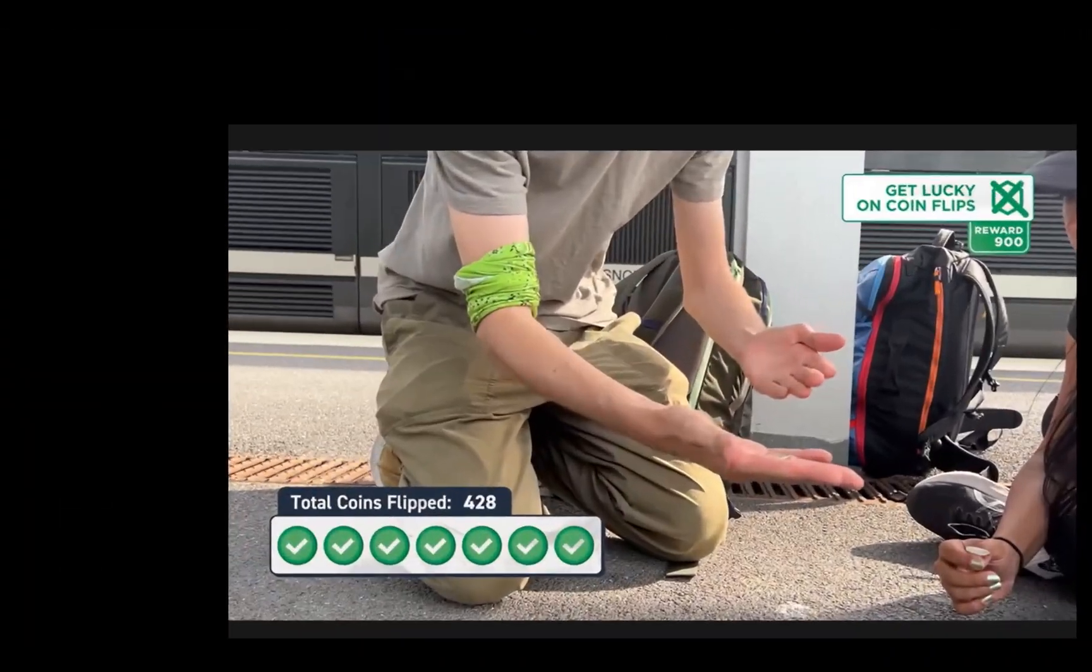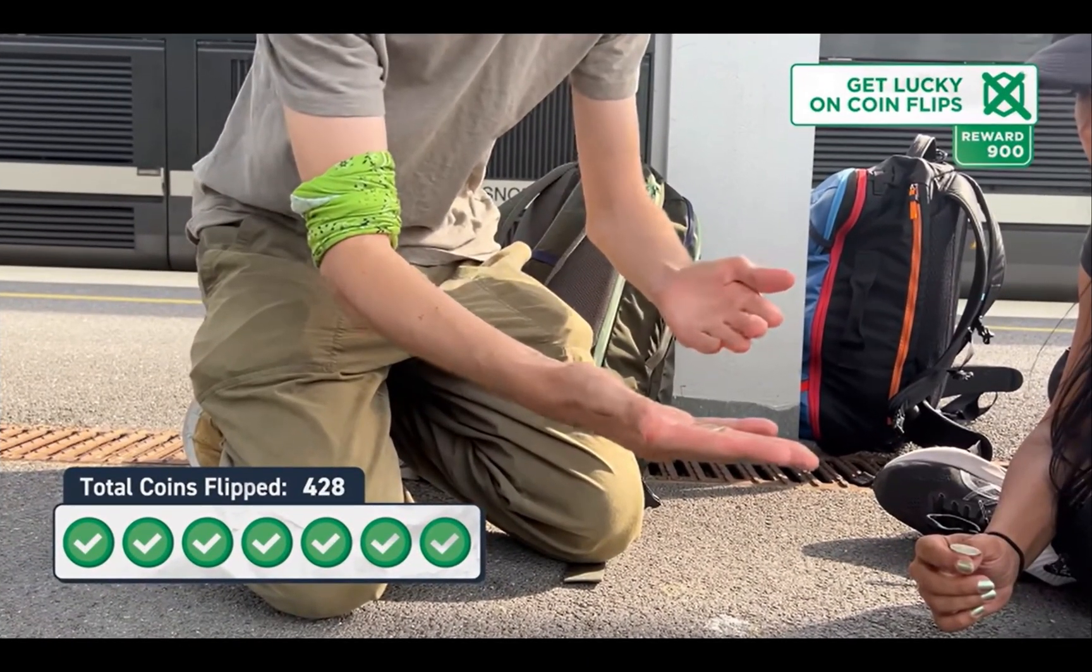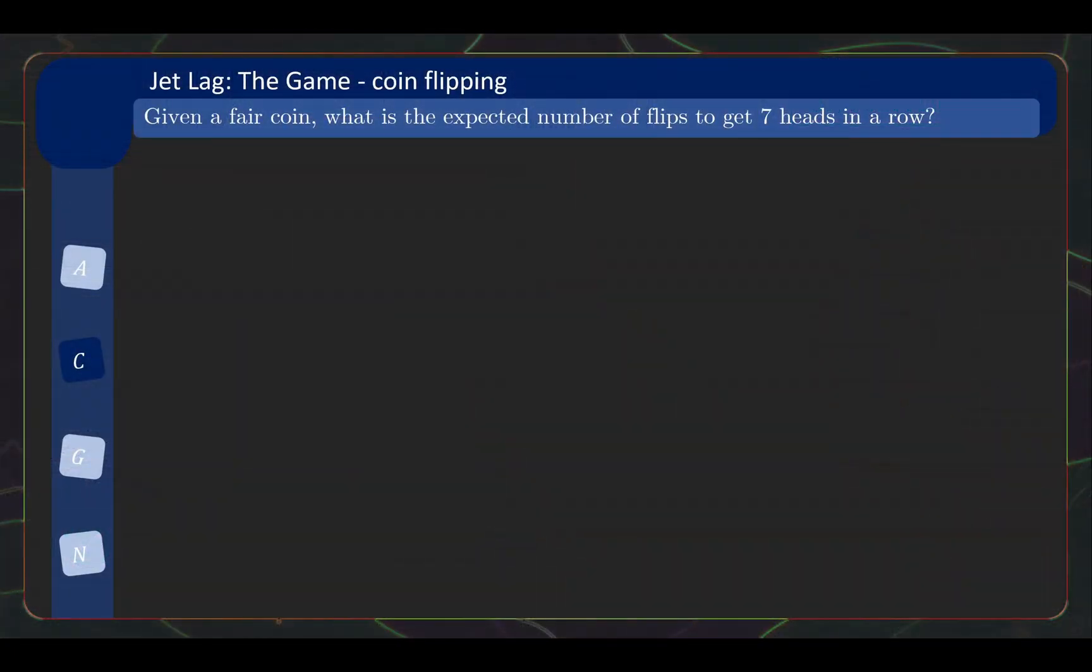And on the second time, well he managed to actually complete the challenge but it took him 428 flips. Now was this considered lucky enough for him to be able to achieve it in 428 flips or is it still really unlucky of him to took so long? Well, let's try and figure out what is the expected number of flips needed to achieve 7 hits in a row.